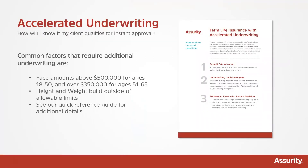Accelerated underwriting gives the client the ability to receive an instant decision upon submitting an application. Some of the factors to consider to make sure a client qualifies for an instant approval include the coverage amount — $500,000 or less for clients age 50 or less, or $350,000 and less for clients age 65 and below. Some other factors also include height and weight. You can see most of this information in our quick reference guide for additional details.